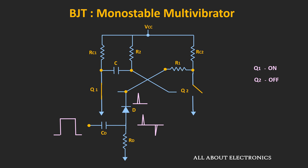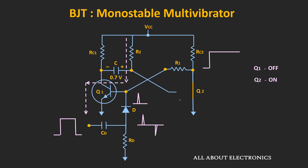Now the voltage at the collector of Q2 goes high, and this same voltage is applied to the base of Q1, so Q1 remains in saturation. In this condition, capacitor C starts charging in the reverse direction — charging towards voltage Vcc. During charging, as soon as the voltage across the capacitor reaches 0.7V (the voltage Vbe), transistor Q2 starts conducting and eventually goes into saturation.